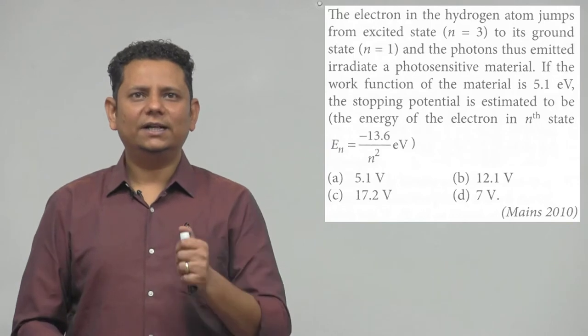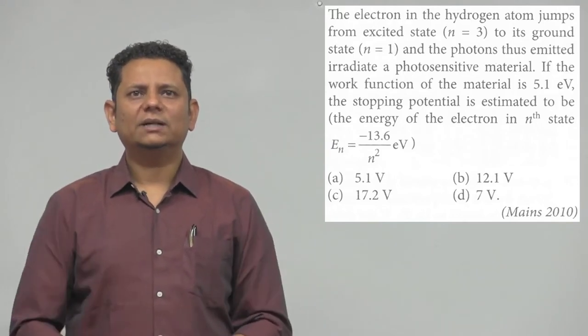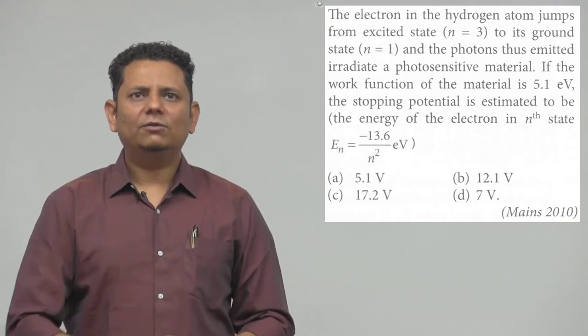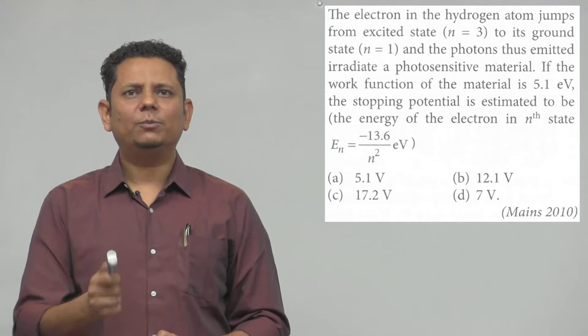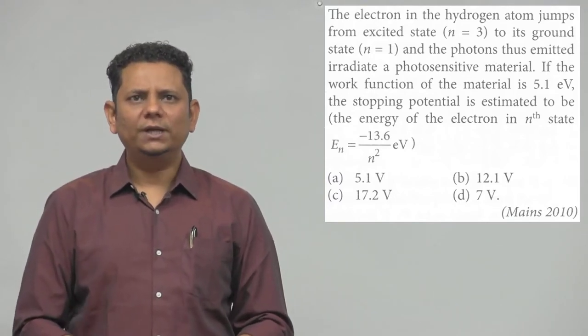Next question. The electron in the hydrogen atom jumps from excited state n equals 3 to its ground state n equals 1. The photons emitted irradiate a photosensitive material. If the work function of the material is 5.1 electron volts, the stopping potential is estimated to be.